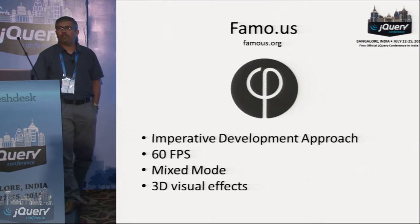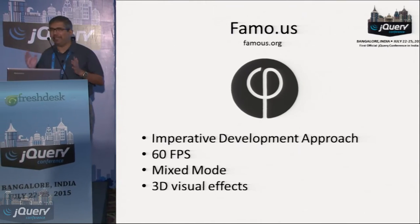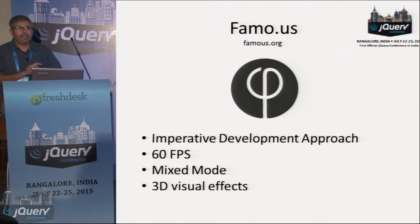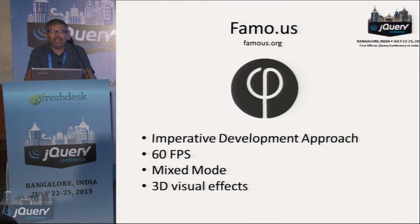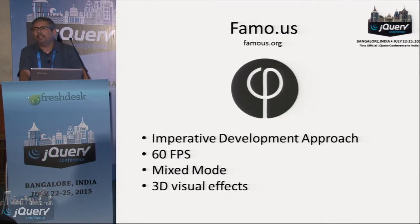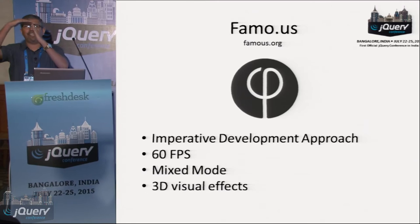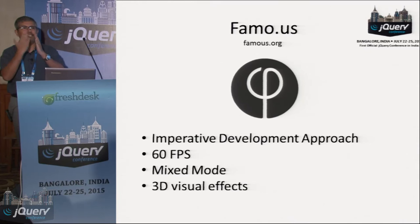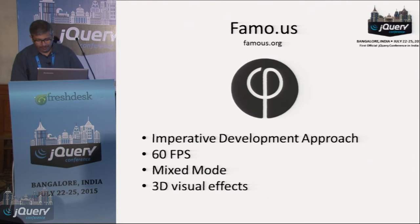Famous supports something called mixed mode. Mixed mode basically means that you can render DOM and WebGL in the same coordinate space, which is otherwise not possible. You would be using Three.js for rendering your WebGL and something like jQuery UI for your DOM, and you cannot sync them together. Famous achieves that - using Famous you can render these two things together within the same coordinate space. The physics engine which Famous supports is in 3D with x, y, and z axes, so you can have physics-based animations with near-far objects. This is how Famous differentiates itself.